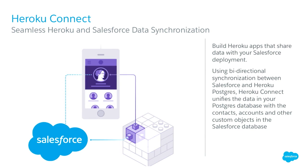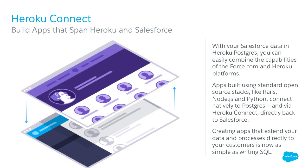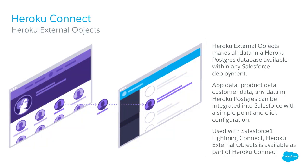Heroku Connect is a point-and-click bidirectional sync between your Salesforce org and your Heroku Postgres database — graphically configured and super useful for joint Salesforce and Heroku apps. You can build apps that span both platforms using Salesforce APIs and data in Heroku Postgres, and sync data using external objects or build Force apps with data in Heroku databases.